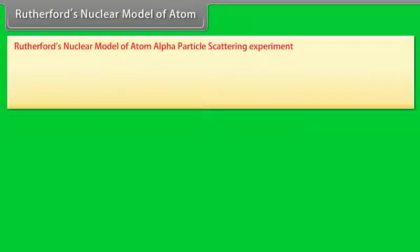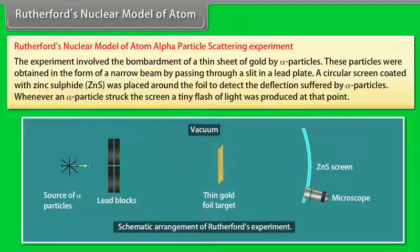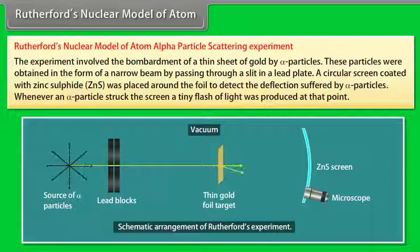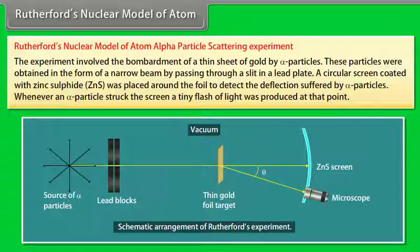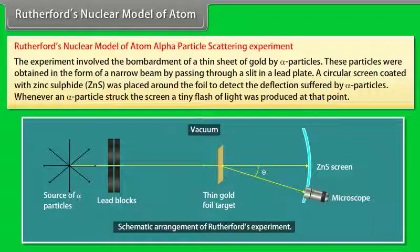Rutherford's nuclear model of atom — alpha particle scattering experiment: The experiment involved bombardment of a thin sheet of gold by alpha particles obtained as a narrow beam through a slit in a lead plate. A circular screen coated with zinc sulfide (ZnS) was placed around the foil to detect deflection of alpha particles — whenever an alpha particle struck the screen, a tiny flash of light was produced.